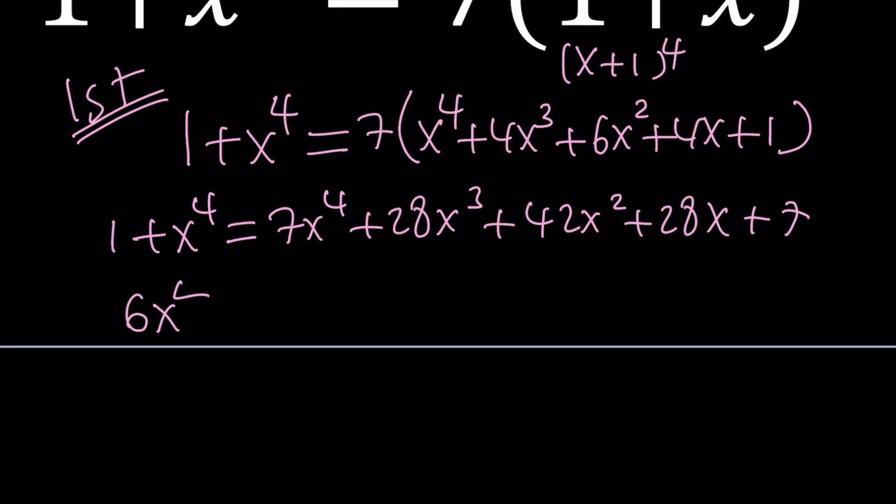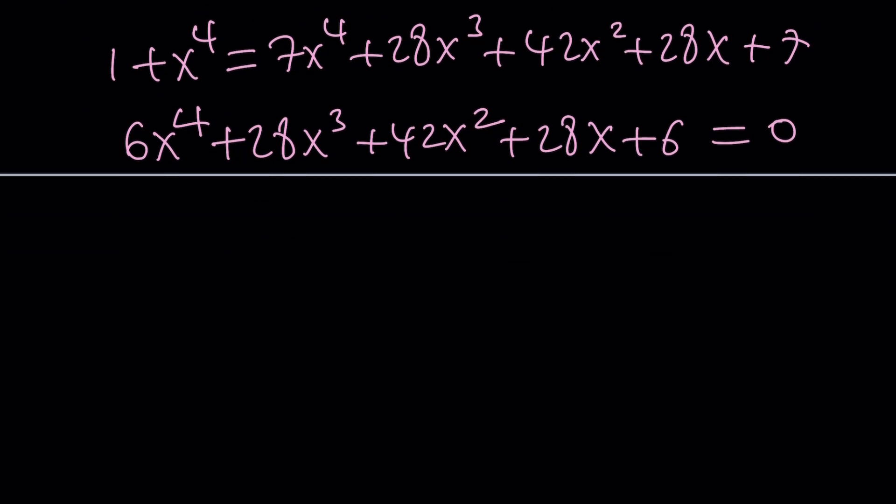And then if you put everything on the right-hand side, you're going to get 6x to the 4th after subtracting 1x to the 4th, and then plus 28x to the 3rd plus 42x squared plus 28x plus 6 because we're subtracting 7 minus 1, and this is equal to 0. Notice that we can divide everything by 2.